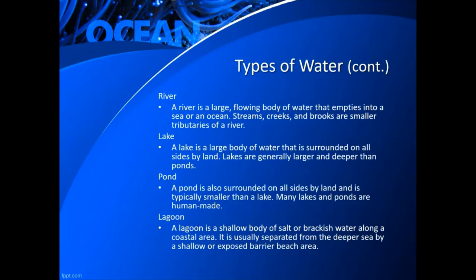A river is a large flowing body of water that empties into a sea or an ocean. Streams, creeks, and brooks are smaller tributaries of a river. A lake, unlike a river which is narrow and flowing quickly, is a large body of water surrounded on all sides by land. Lakes are generally larger and deeper than ponds. Ponds are also surrounded on all sides by land and are typically smaller than a lake. Many lakes and ponds are actually human-made.